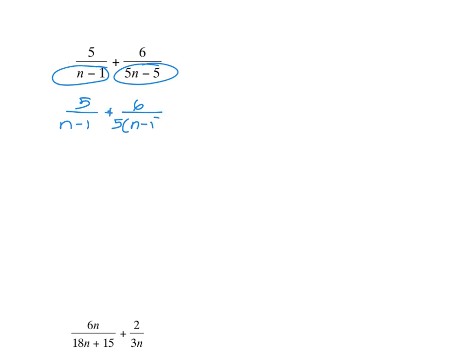I'm going to pull out a five, because that's what's going to help me see more easily what they have in common. I like to highlight the common factors — both of these have an n minus one. So the only thing I need is for this to be multiplied by five. If I multiply by five on the bottom, I need to also multiply by five on the top. So that's going to give me 25 over five times n minus one, and then we have six over five times n minus one.